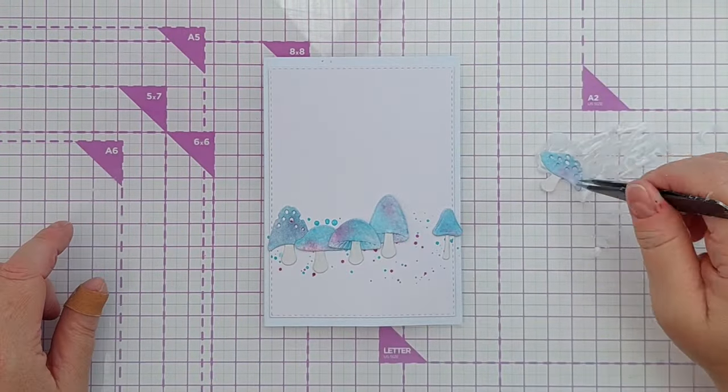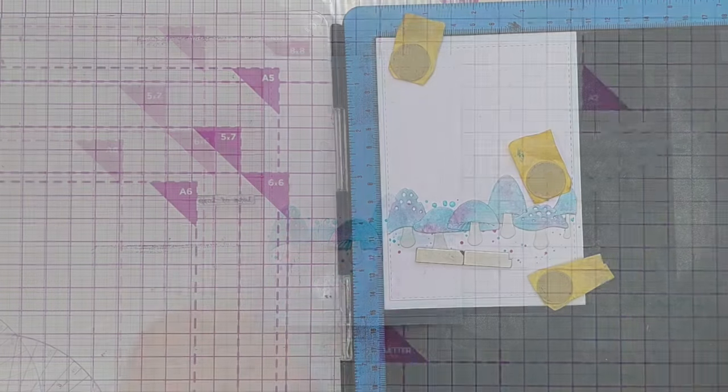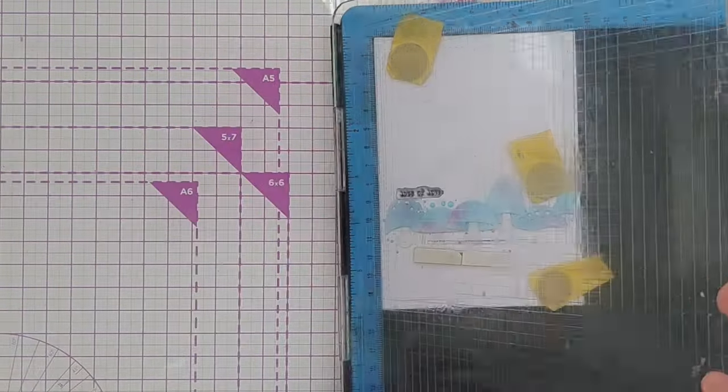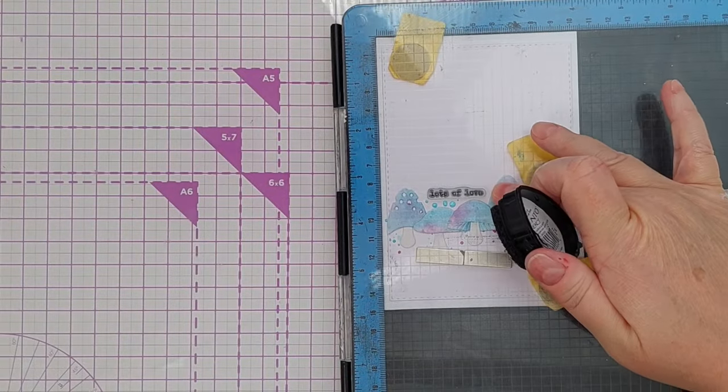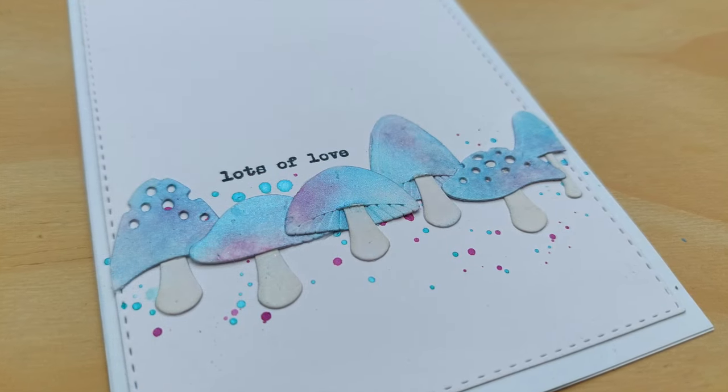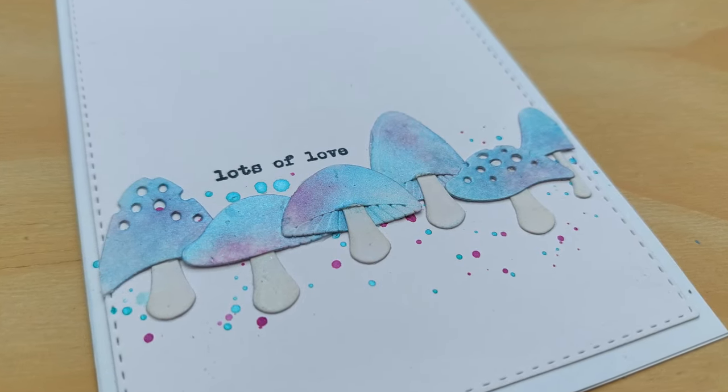For my sentiment I chose a 'lots of love' typewriter font stamp and stamped that in Memento Tuxedo Black ink, nestling the sentiment in an appropriate space between some mushroom caps. I'm really happy with the way this turned out.